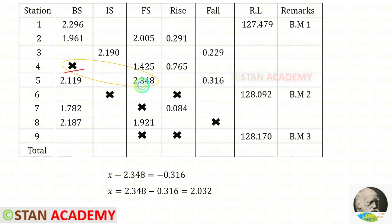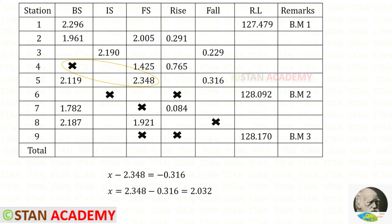So x minus 2.348 is equal to minus 0.316. To find x we have to take this value to the other side, so it will come as positive. In this way, for x we will get 2.032. Let us apply that.